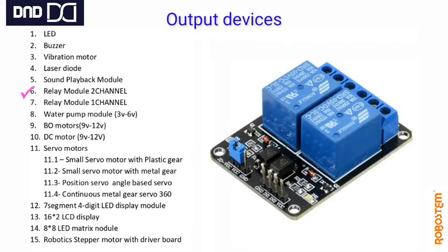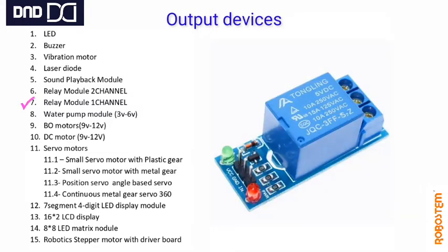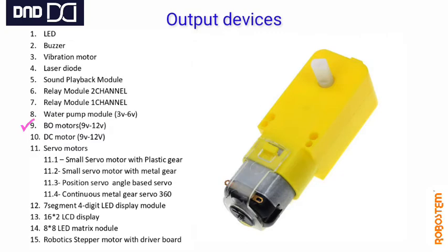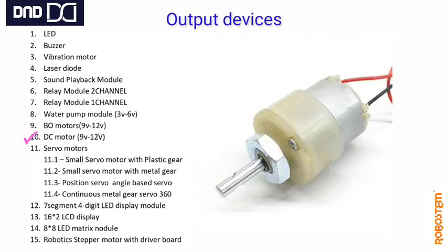The relay module interfaces high and low voltage signals. It is available as a two-channel or one-channel relay. We also have a submersible water pump. BO motor — battery operated motor — is available. DC motor at 150 rpm is also available as an output device.